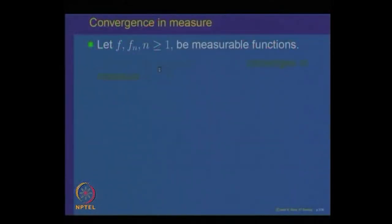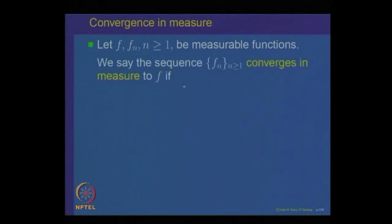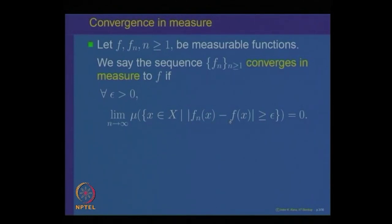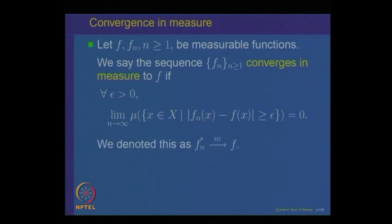Let us recall what we have been doing. F and F_n are measurable functions on a measure space. We said that F_n converges to F in measure if for every epsilon greater than 0, the measure of the set of all x where |F_n(x) - F(x)| is bigger than or equal to epsilon goes to 0 as n goes to infinity. This is called convergence in measure, denoted by F_n →^M F.